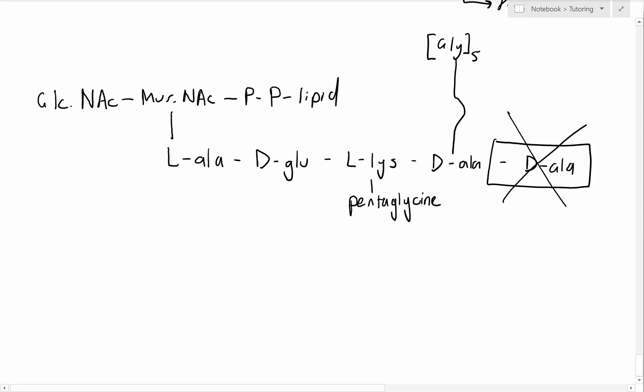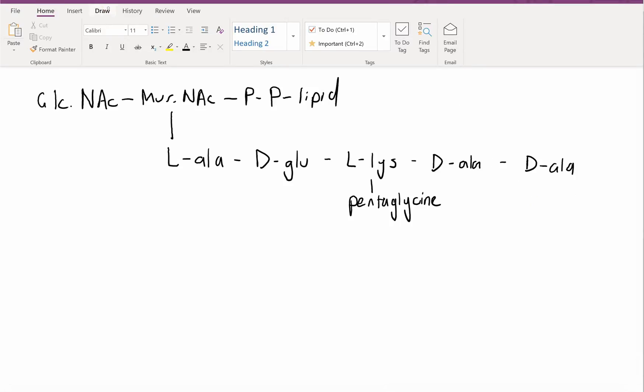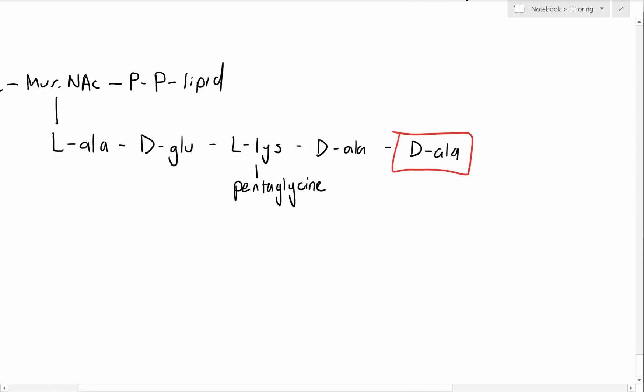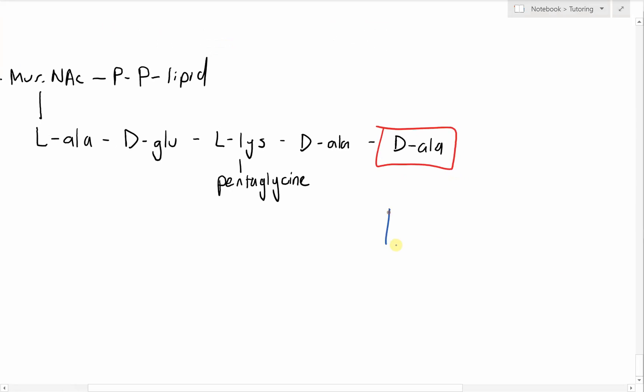Now what vancomycin does is it actually binds this terminal D-ala. Vancomycin binds to this terminal D-ala group and actually stops the transpeptidase. The transpeptidase then comes in and tries to bind to the D-ala group but it can't, and if it can't bind to that D-ala group then it can't obviously cleave it. It can't get synthesis of that cell wall and eventually it's going to die.